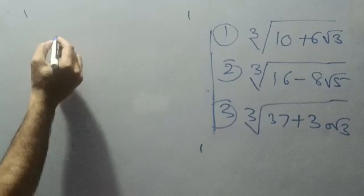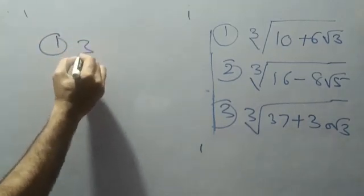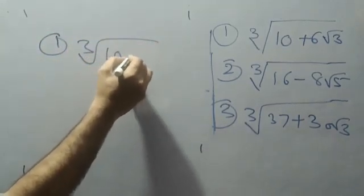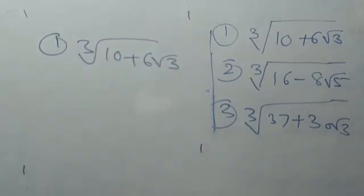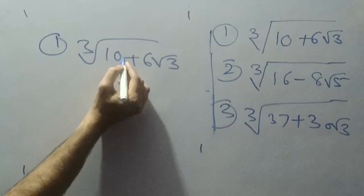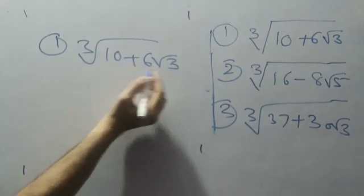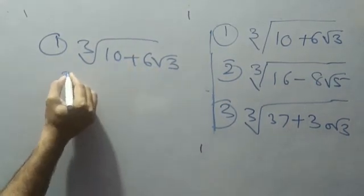Taking the first problem: cube root of 10+6√3. To apply the shortcut method, first condition is a number and a square root should be there. Here root 3 is there, but I will convert this into proper form first.